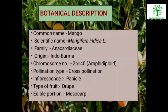Botanical Description of Mango: Common name is Mango. Scientific name is Mangifera indica Lin. Family is Anacardiaceae. Origin is Indo-Burma. Chromosome number is 2n equal to 40, i.e. Amphidiploid. Pollination type is Cross-Pollination. Inflorescence is Panicle. Type of fruit is Drupe and edible portion is Mesocarp.